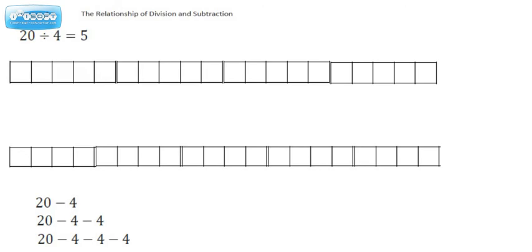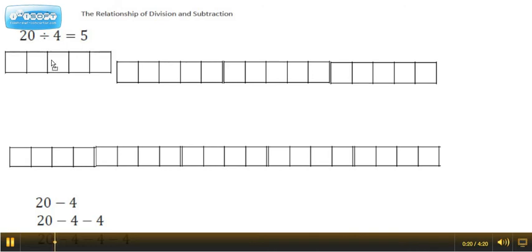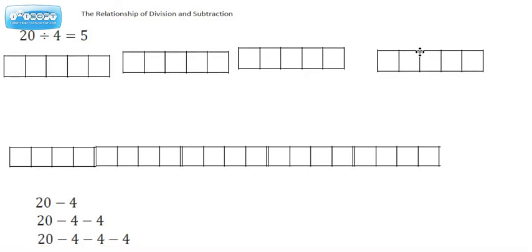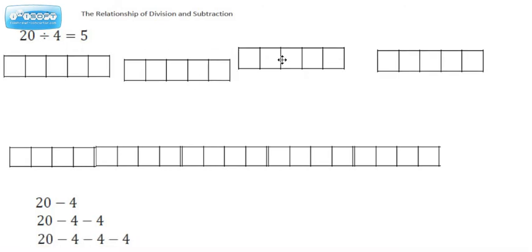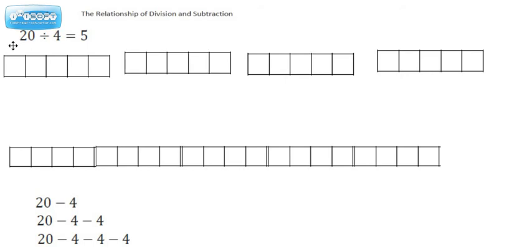We're going to take a look at 20 divided by 4 equals 5. Now, I'm sure you've had a lot of experience with this. If we're going to take 20 and break it up into four separate groups, you can see that we have 5 in each group. That's not a difficult concept to understand. But let's rethink this as repeated subtraction.